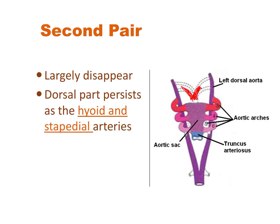The second pair of the pharyngeal arch artery also disappears for most of its part, but the remaining part will form the hyoid artery and stapedial artery.